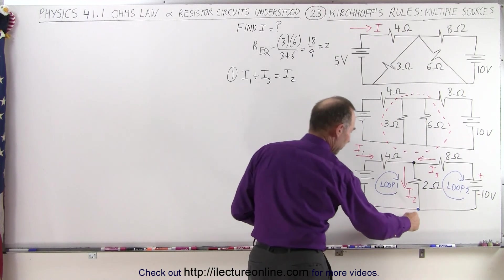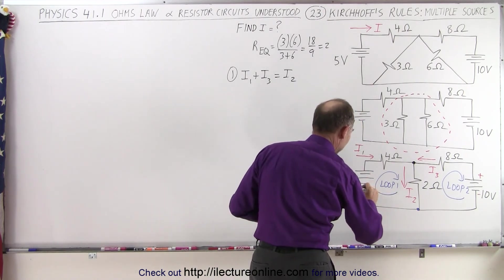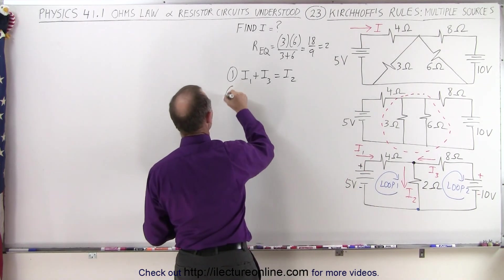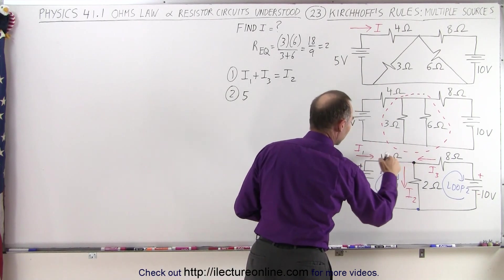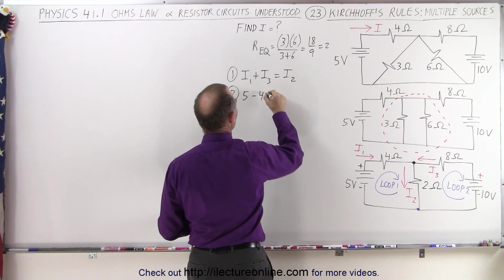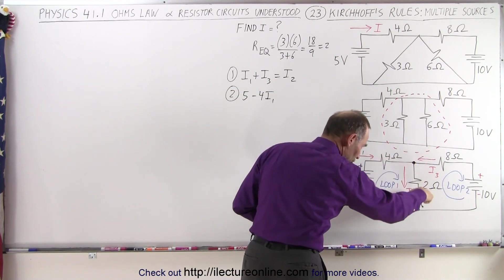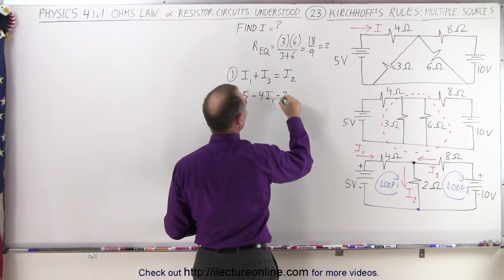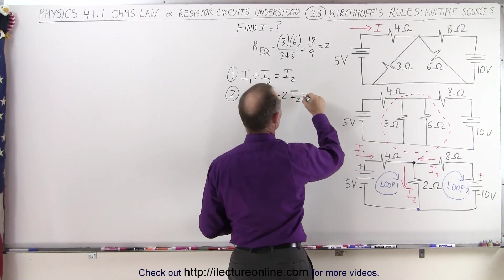So for the first loop here, I go around, we have an increase from the negative to the positive end of the battery, so that's a plus five volts. That's a five volt rise. Here we have a drop, current times resistance, so that would be minus four I1. Then we come around the corner, go to this resistor, that's a voltage drop, because we go in the same direction as the current. That's minus two I2, and when we get back to the branch point, that adds up to zero.